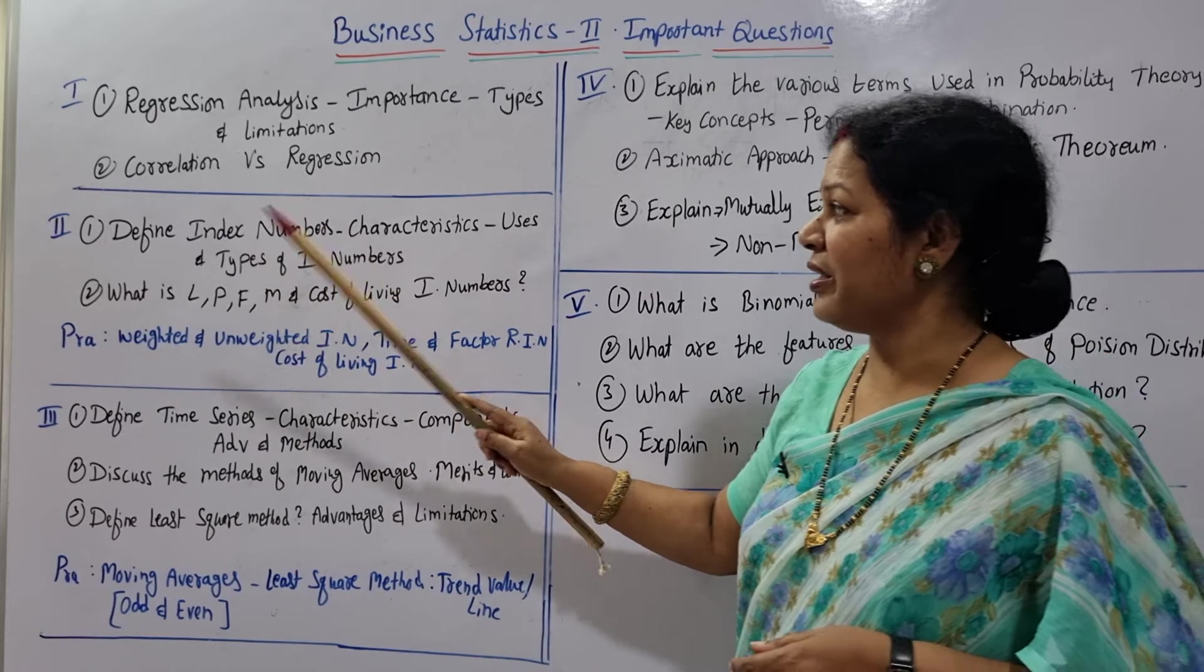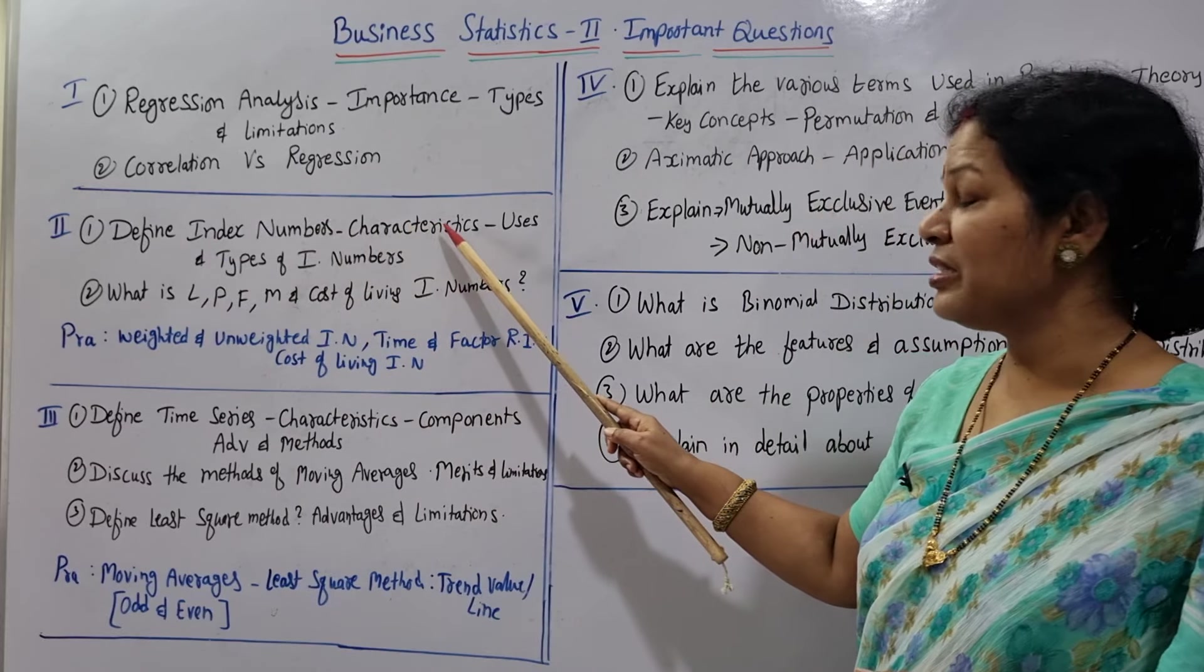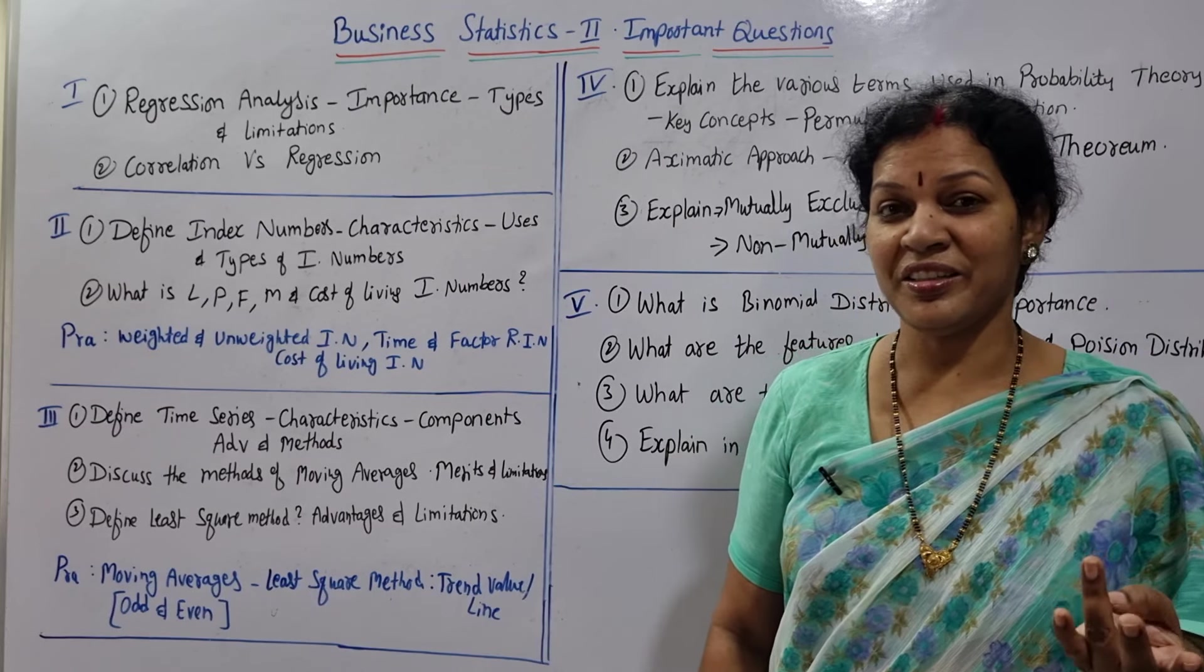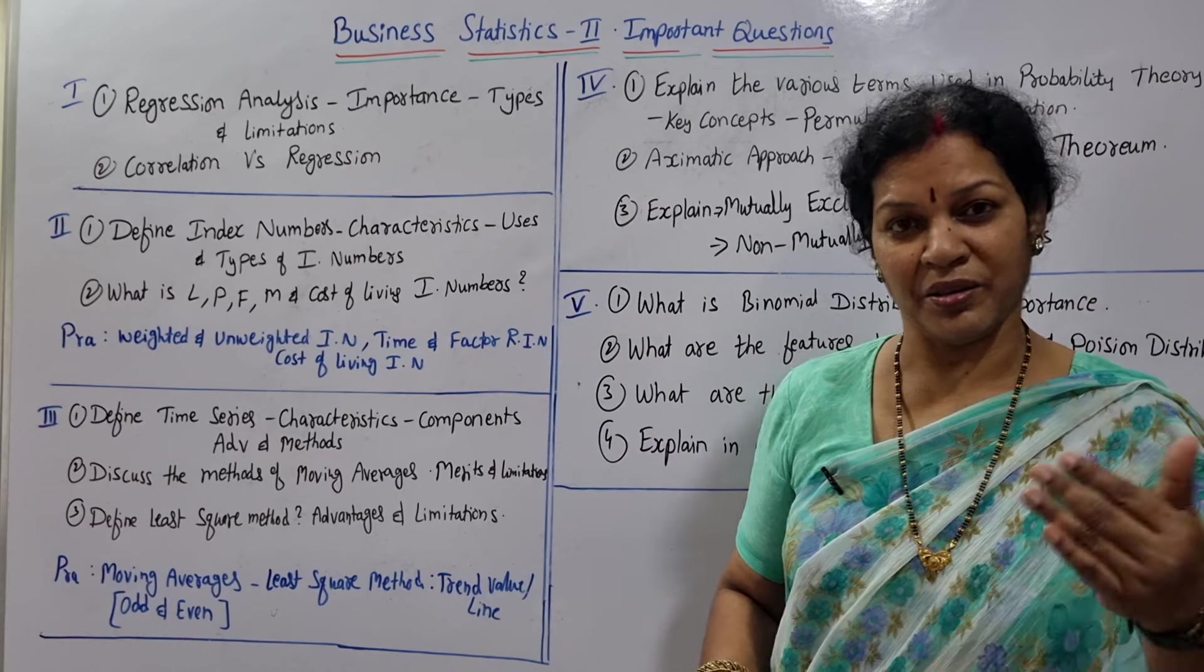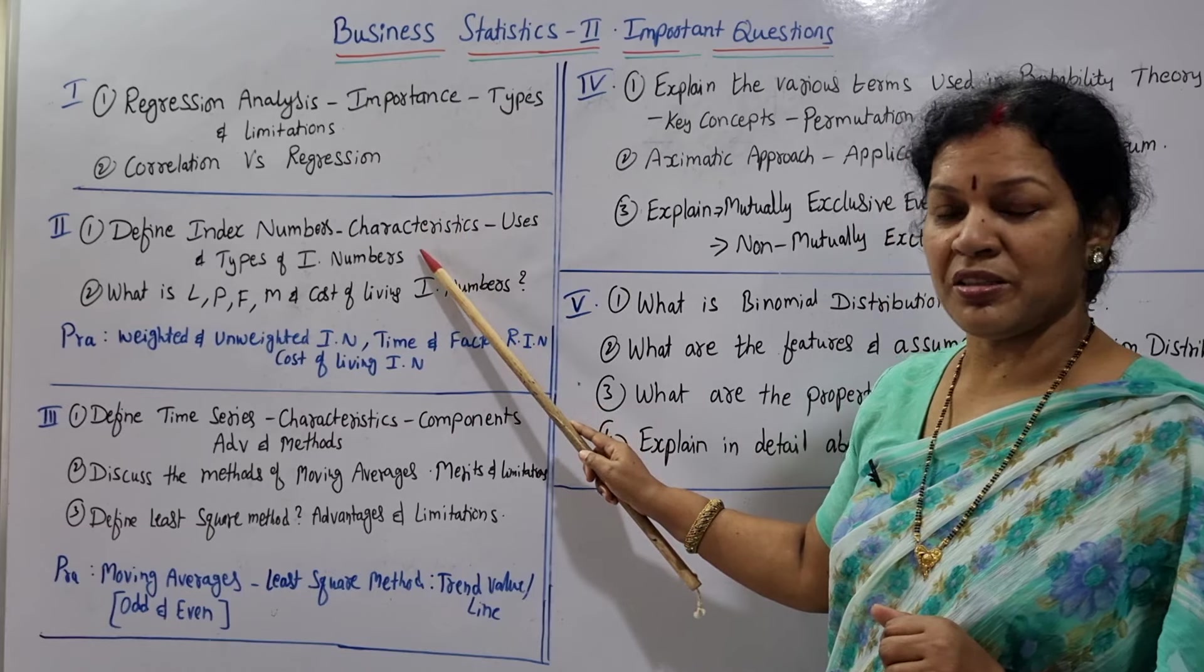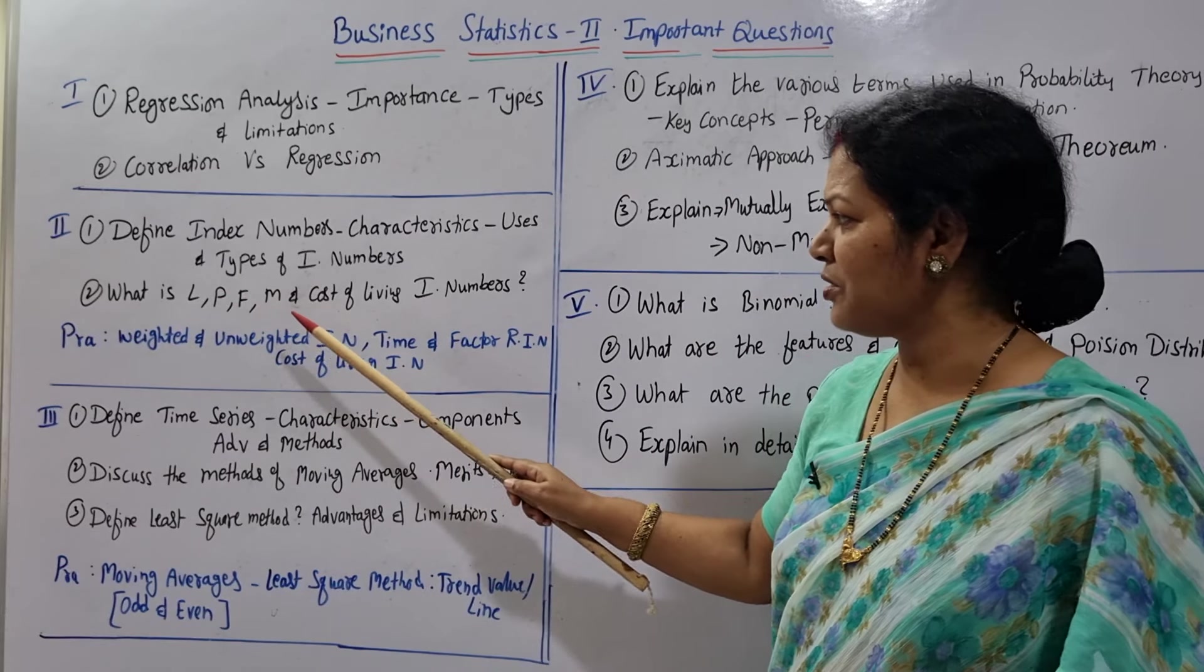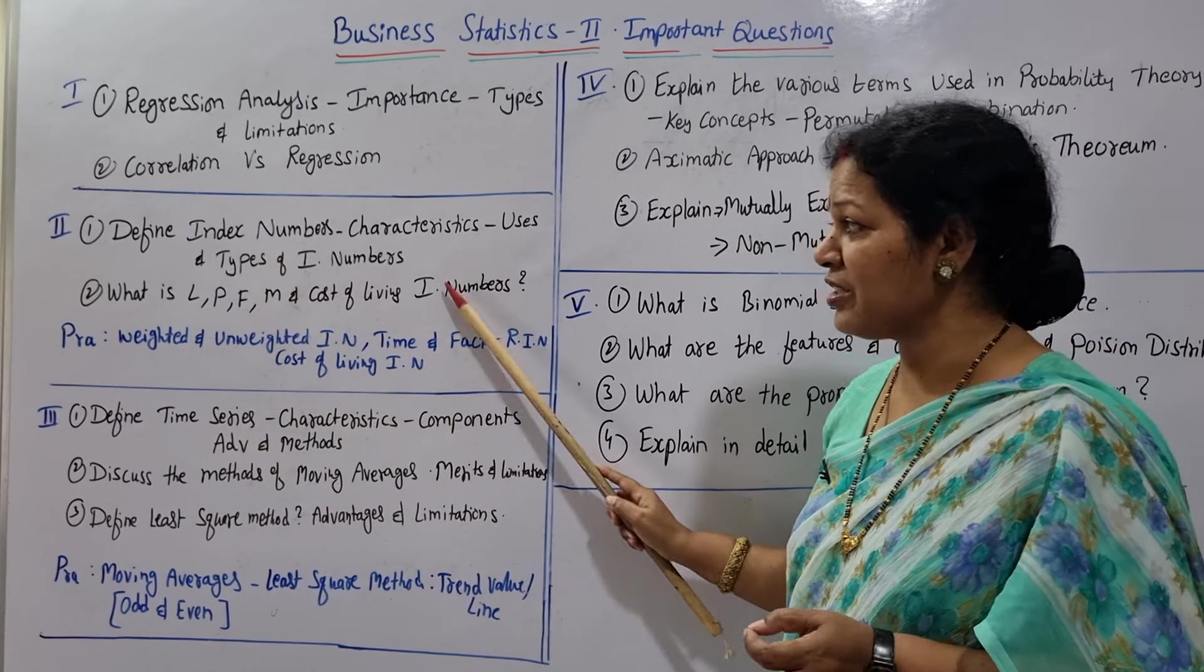Second unit is Index Numbers. First question is: define index numbers, its characteristics, uses and types of index numbers. In types of index numbers you will have weighted, unweighted, and under unweighted different types, weighted once again classified. I think you have idea, already covered in our channel. Second one: what is Laspeyre's, Paasche's, Fisher's, Marshall, and cost of living index numbers - these things you can expect.